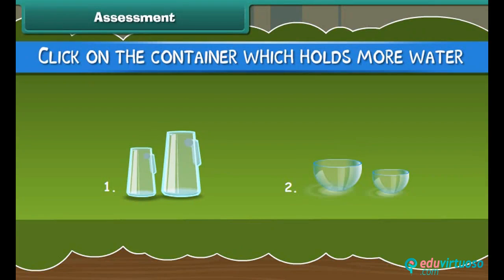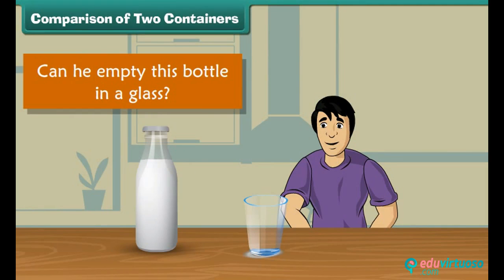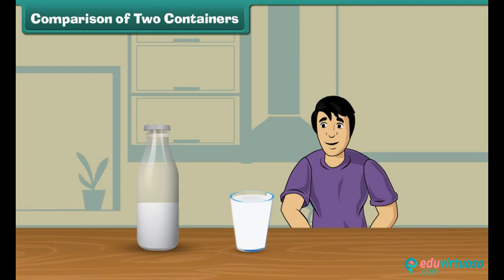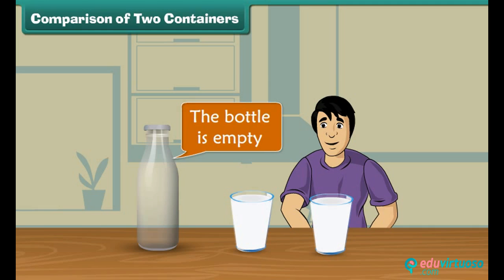Now it is time to check what you have learned. Click on the container which holds more water. Sam brought a bottle of milk. Can you empty this bottle in a glass? He fills the glass with the milk from the bottle. Look, milk is still there in the bottle. He then takes another glass and pours the remaining milk in it. Look, the bottle is empty now. Thus, Sam can empty this bottle of milk into two glasses.